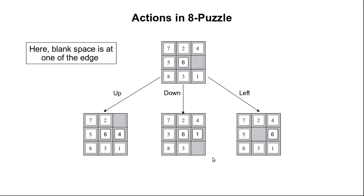The diagram also shows the new configuration for each action. When we perform the action to move the blank space up, this would be the resultant configuration. If we perform the action to move the blank space down, this would be the new configuration. And if we perform the action to move the blank space to the left, the blank space moves there and six would move into the blank space.